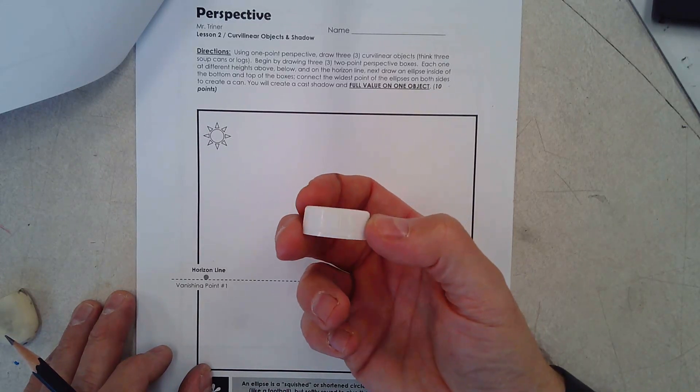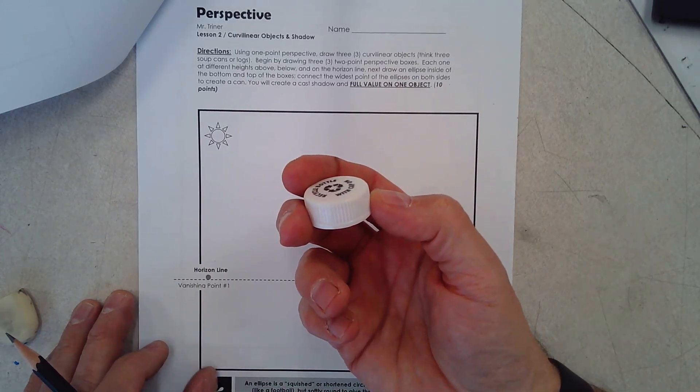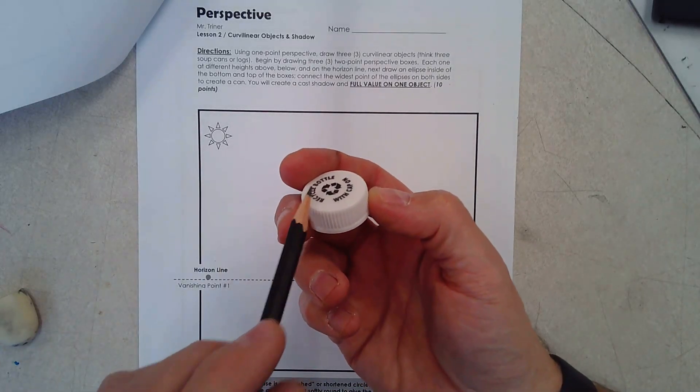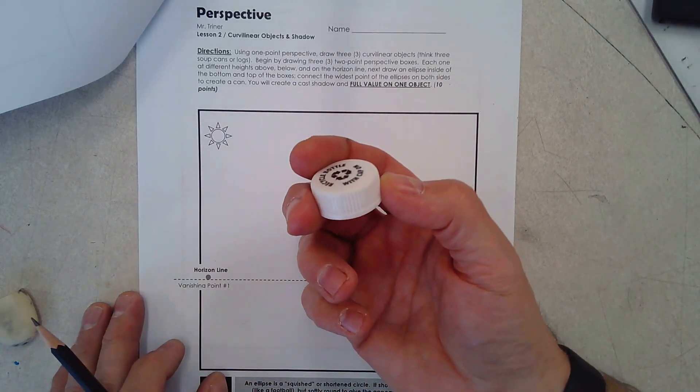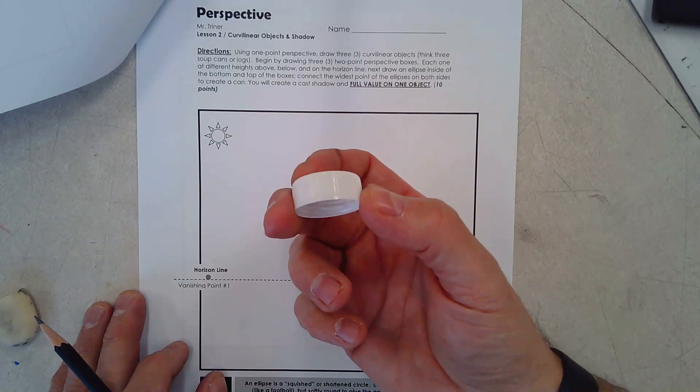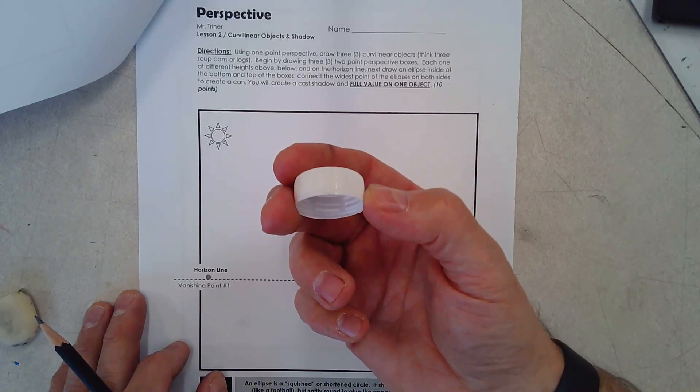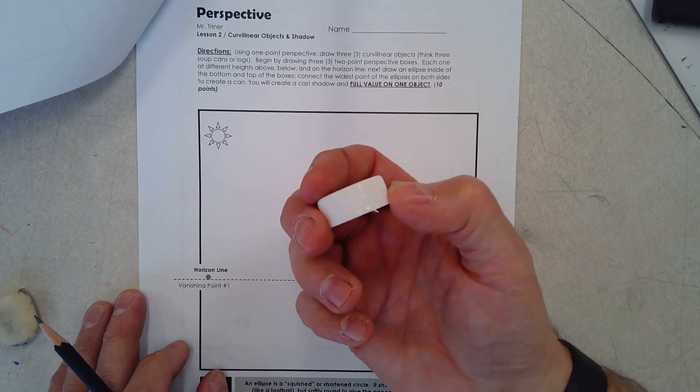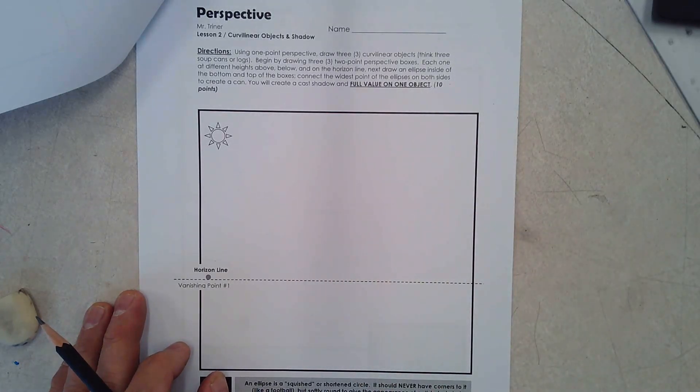You can imagine if I had to draw this and represent the fact that I could see the top and the side of it, how would I create it so that it was done in correct perspective? So we're going to practice drawing a curvilinear or basically a rounded object in correct one-point perspective.